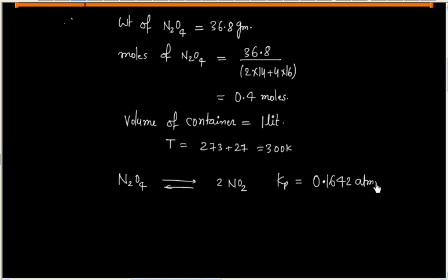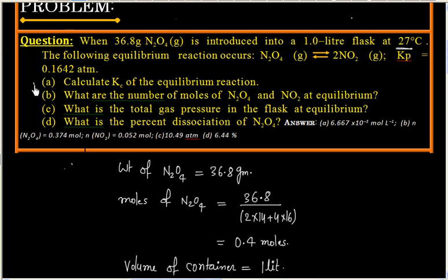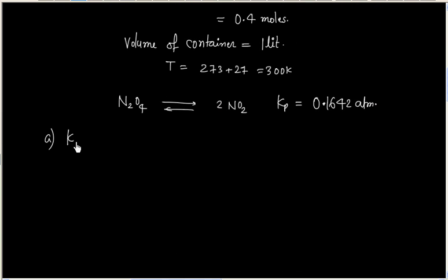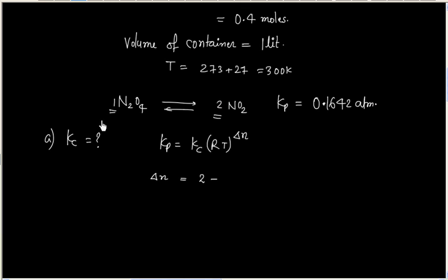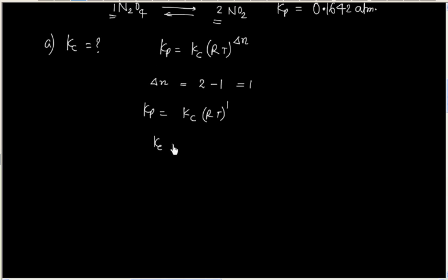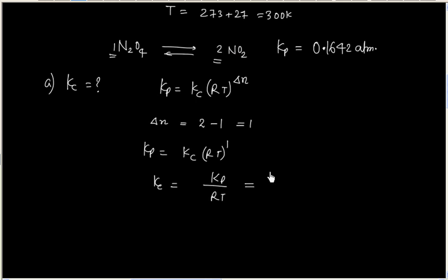The first part of the question says to calculate Kc of the reaction. We know that Kp equals Kc into RT to the power delta N. For this reaction, delta N is moles of product minus moles of reactant, that is 2 minus 1, so delta N equals 1. Therefore, Kp equals Kc into RT to the power 1.